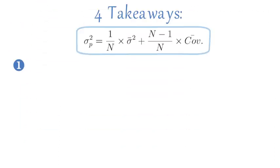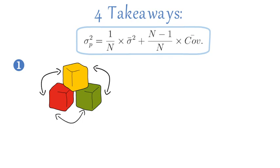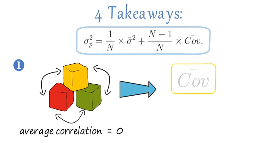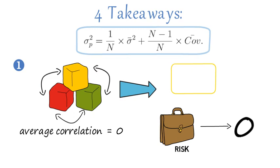So first, if the average correlation among assets is zero, the covariance upper bar term vanishes and portfolio risk converges to zero as we increase the number of assets in the portfolio.